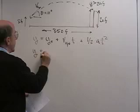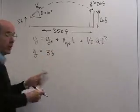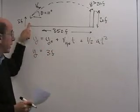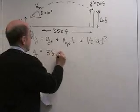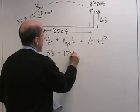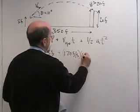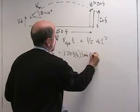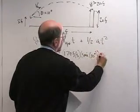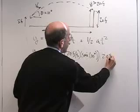And so if I put in the numbers I'm going to get y is equal to 3 feet, that y0 is because the ball was hit about 3 feet off the ground, plus 170 feet per second times the sine of 10 degrees times 2.09 seconds.